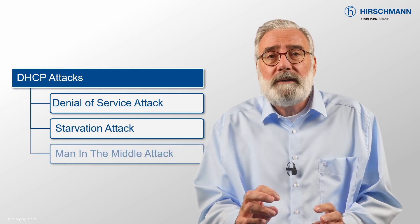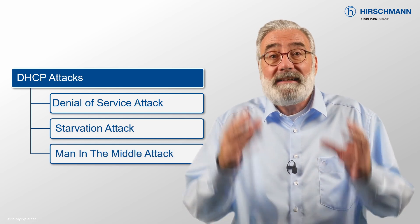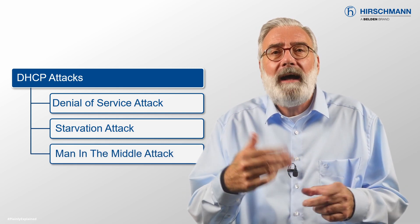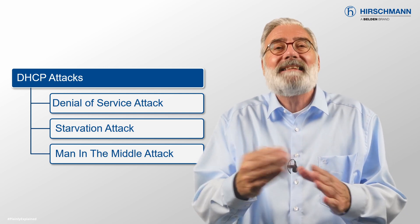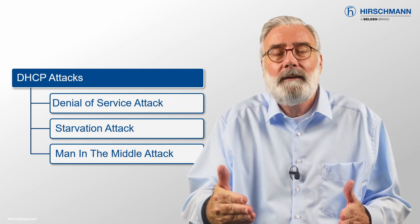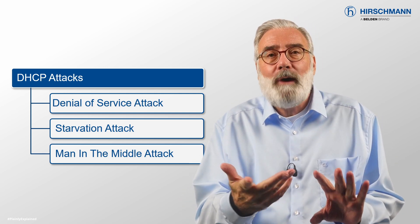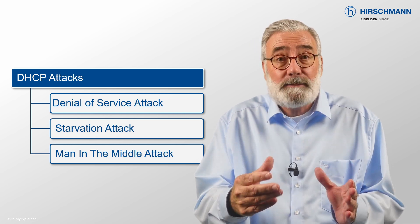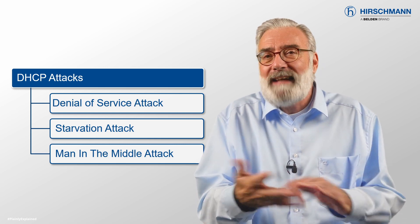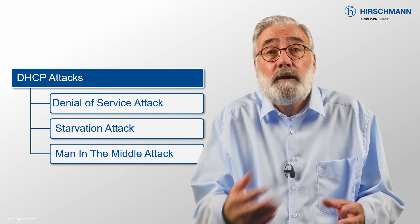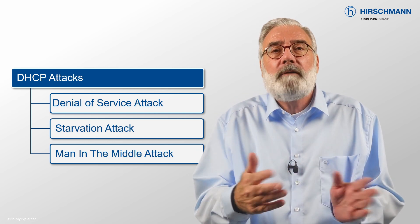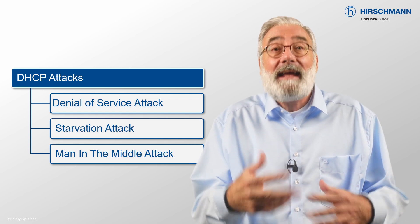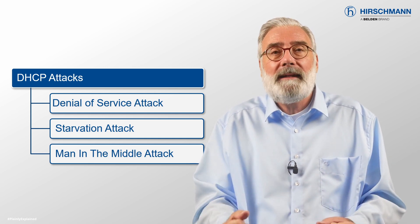A rogue DHCP server can provide compatible IP addresses, but offer an attacker's IP address as the gateway. Data intended for an external network would then go to the attacker's PC, where it can be examined or even modified before being forwarded to the legitimate gateway. This is known as a man-in-the-middle attack.